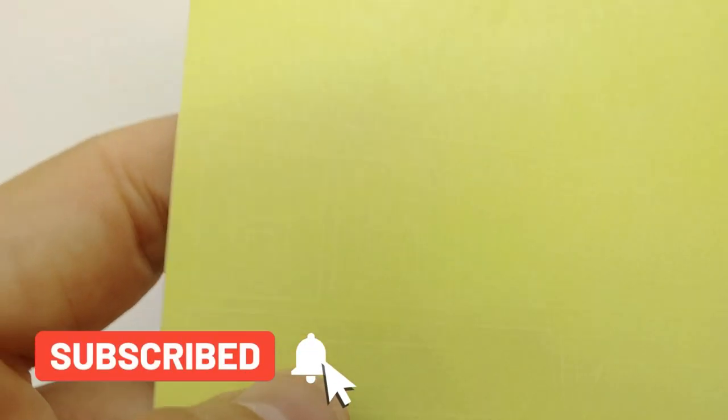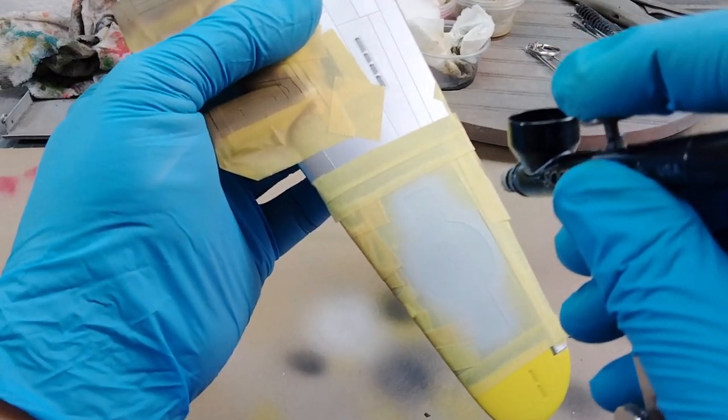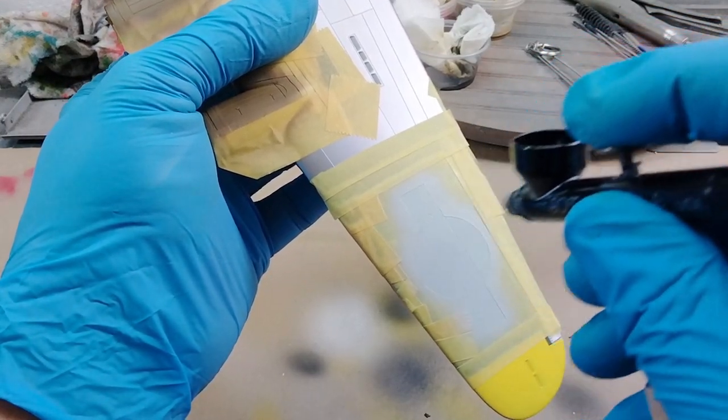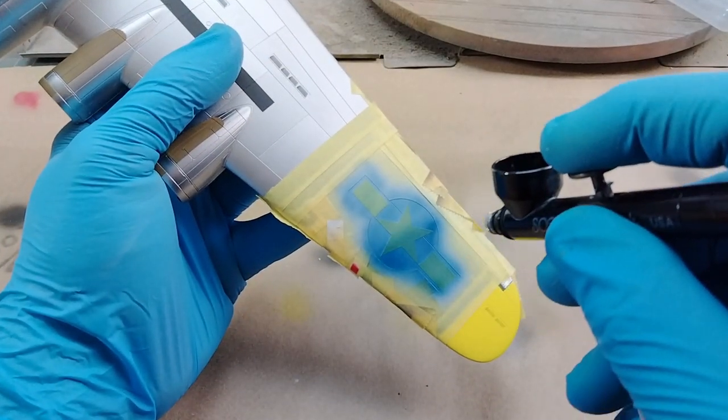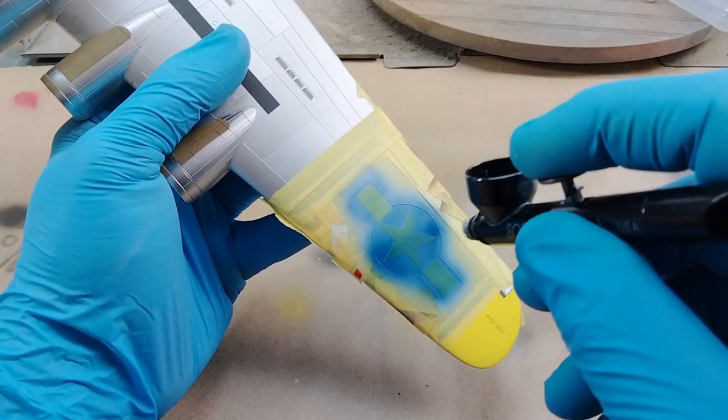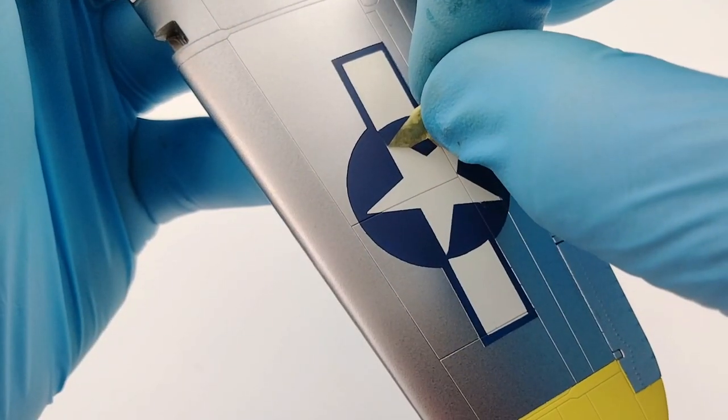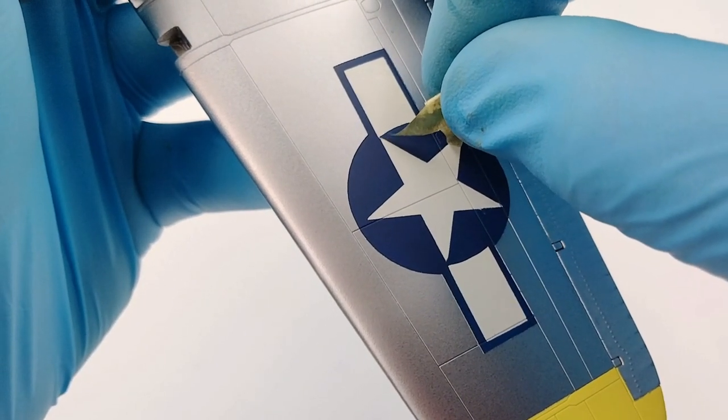You can also do generic sheets of masks of varying sizes of markings like insignia, lettering, wing and fuselage bands and so on. One of the things you have to plan for when creating your masks is the order in which you will paint the markings if it has more than one color. You have to create the mask in such a way that you can stage your work, masking for the first color, then the second and so on.